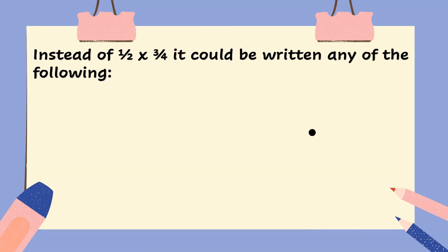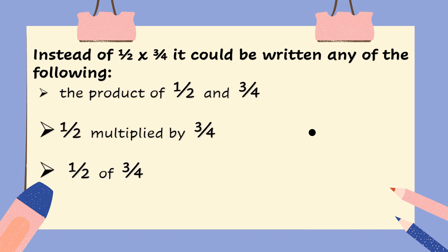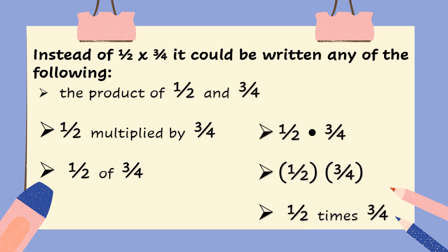Instead of writing one-half times three-fourths, it could be written any of the following: the product of one-half and three-fourths, one-half multiplied by three-fourths, and one-half of three-fourths. We can also use the different symbols.